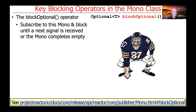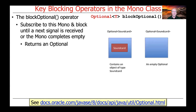blockOptional is another operator we're going to cover. Like block, it subscribes to the mono and then blocks until a next signal is received or until the mono completes empty. What's returned here is an Optional. It's worth taking a moment to re-explain what an Optional is — it's an interesting class that was added in Java 8, which allows us to work around some limitations with earlier versions of Java.